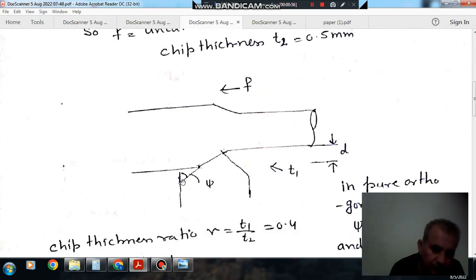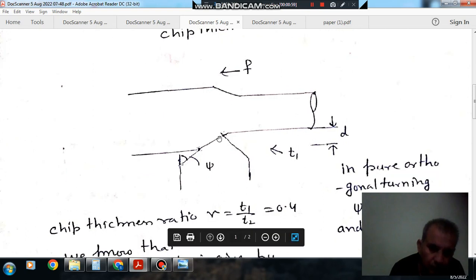This psi is your 0. So psi is 0, so it means this line will be perpendicular to this, like this. This will be perpendicular to this.